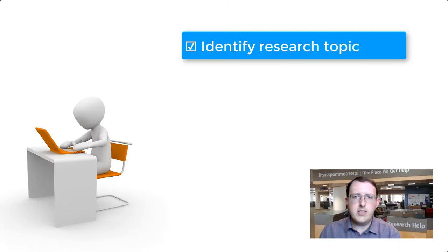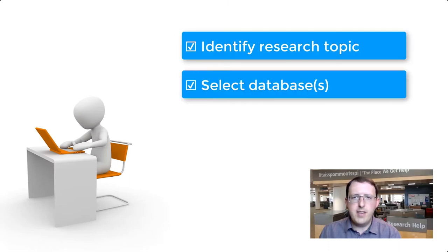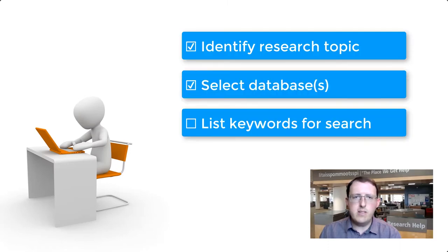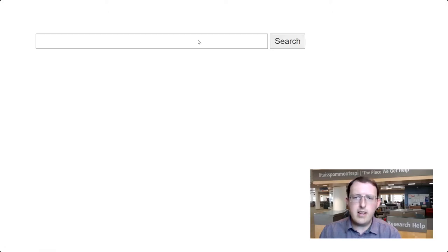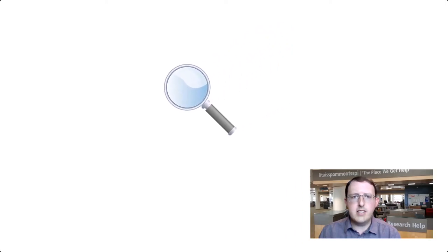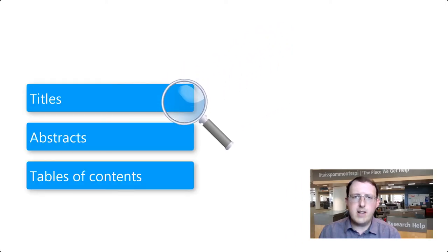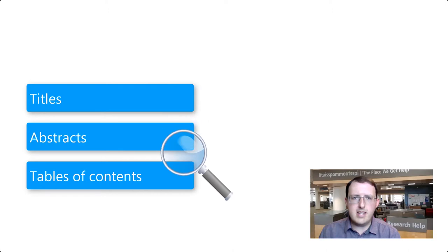Once you've identified a research topic and a database to search, it's time to start thinking about the keywords you will use to find relevant sources on your topic. When running a keyword search, the database will return results that have the keywords you've entered in certain fields, such as the title and abstract or table of contents.